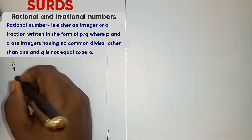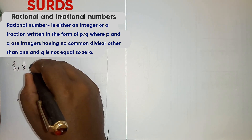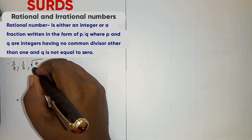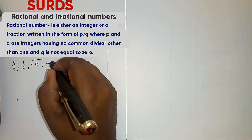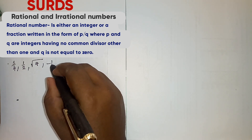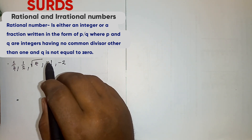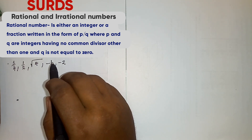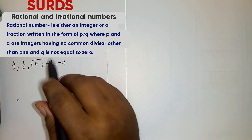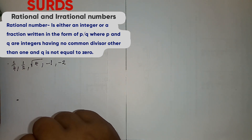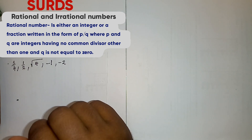That is what you call a rational number. Another example is one half — it is also a rational number. The square root of 4 is also a rational number. Negative 1 and negative 2 are also rational numbers. Recurring decimals can also be rational numbers, because they can be written as a fraction, in the form P over Q.